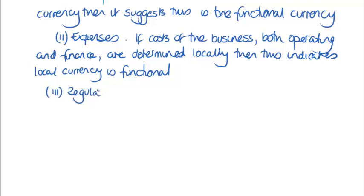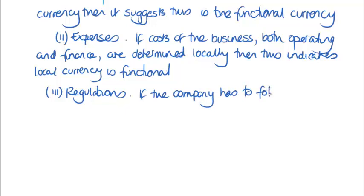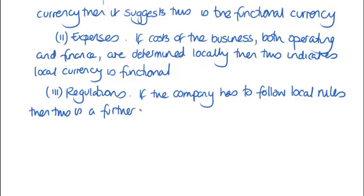We've also got information about regulations, rules, and how decisions are being made. The more decisions which are being made locally and the more rules we have to apply locally, the more likely it is that the DINAR is going to be our functional currency. The question says that STEM's management have a degree of authority and autonomy. So when we come to apply these rules, we're going to use this as our method of determining whether we've got a functional currency of dollars or DINAR. If the company has to follow local rules, this is further evidence of it being the functional currency.